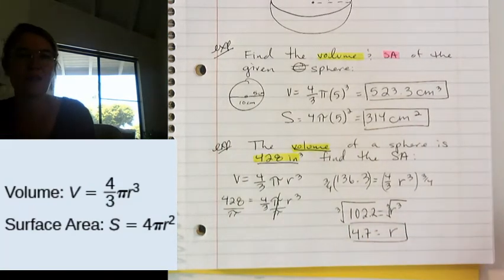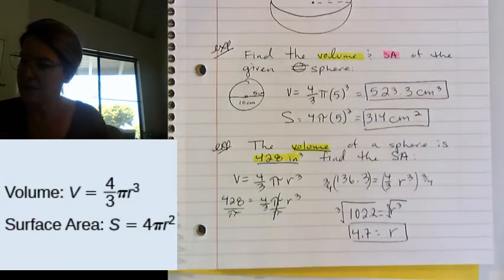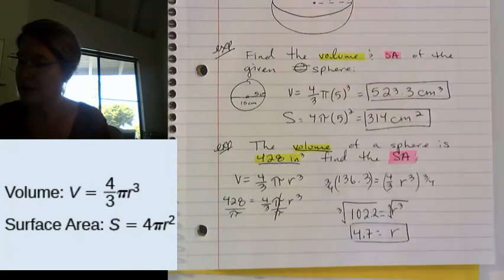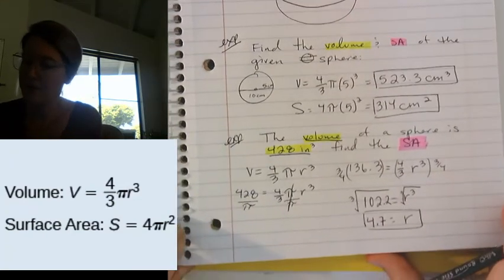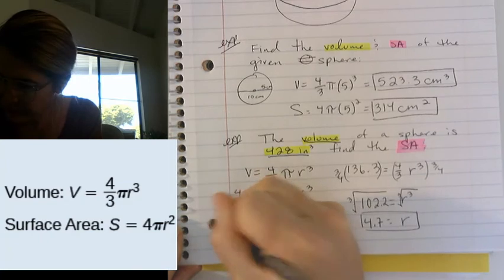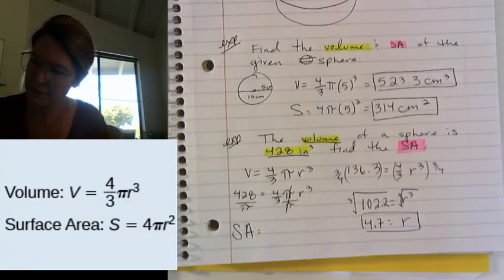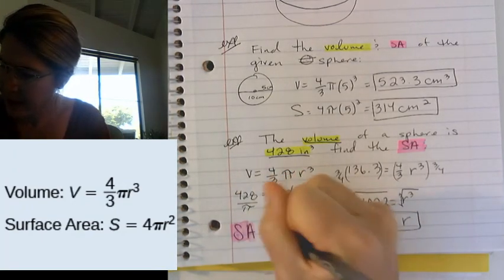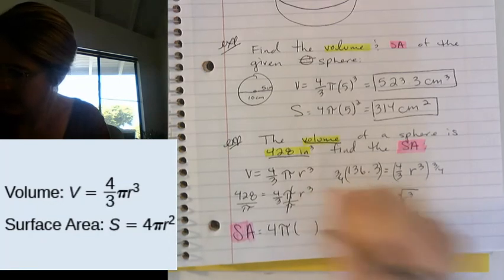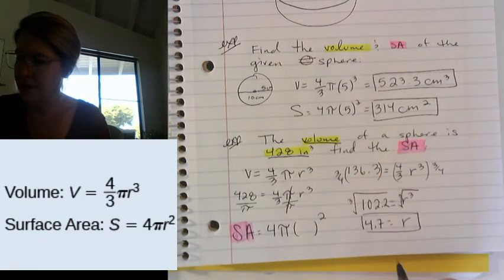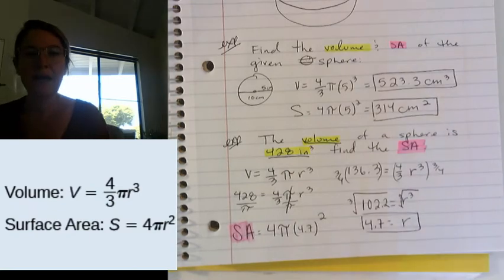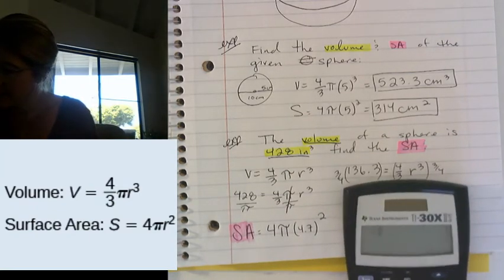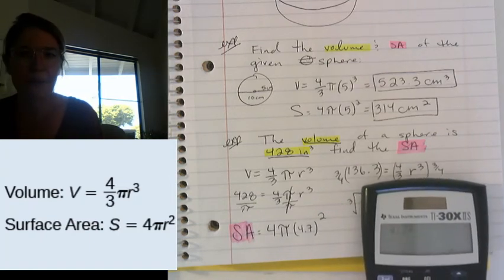What are we trying to find? We're trying to find the surface area. So now that I know my radius, I can just plug into my surface area formula. So surface area is 4πr². And my radius was 4.7. Again, when we plug this in the calculator, you want to do your exponents first. So that's 4.7 squared. There's a nice little squared button for that one. So not too bad.